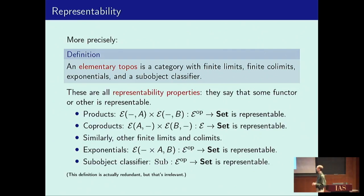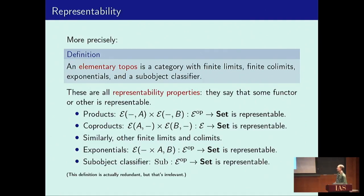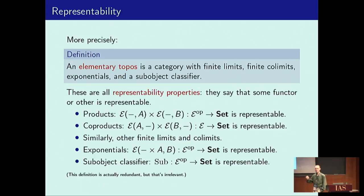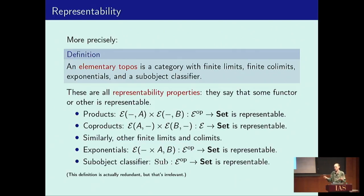Here's a more precise definition of an elementary topos: it's a category with finite limits, finite coproducts, exponentials, and a subobject classifier. These are all representability properties. Finite limits say that certain functors are representable. Exponentials mean it's Cartesian closed. A subobject classifier says that the functor taking every object to its set of subobjects is representable. This definition is redundant — you can remove some axioms and still get an equivalent definition — but I like to include them because when we generalize to the higher dimensional case or to predicative cases, it's less obvious that it's similarly redundant.